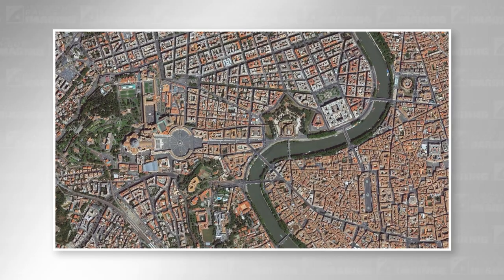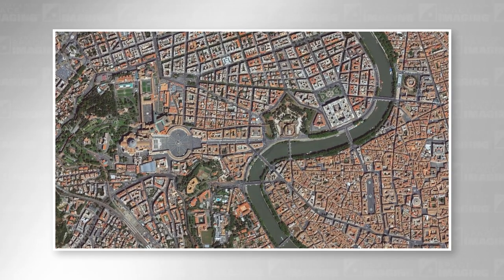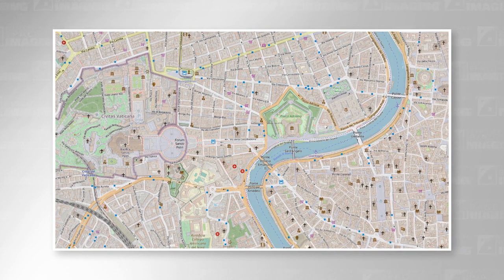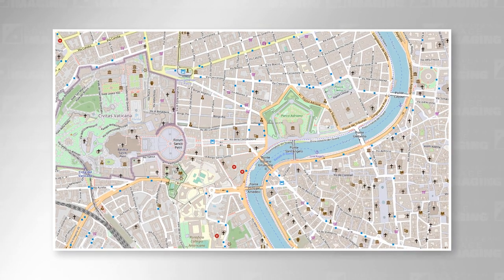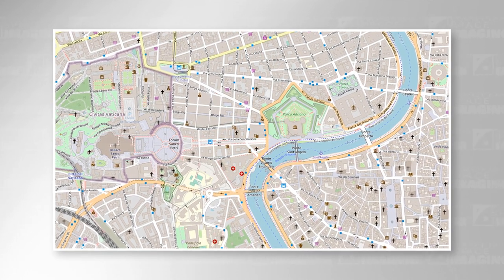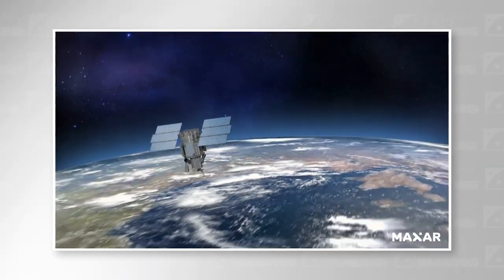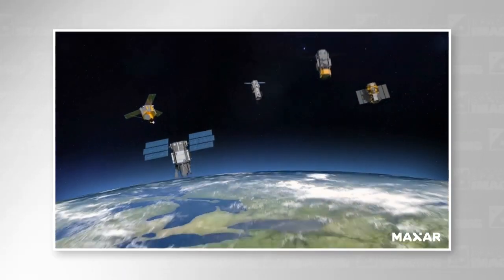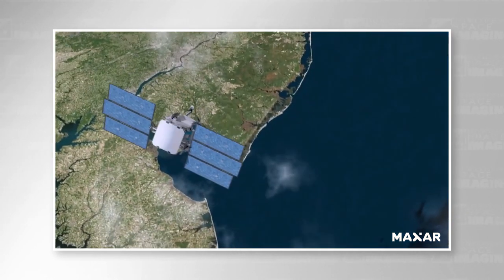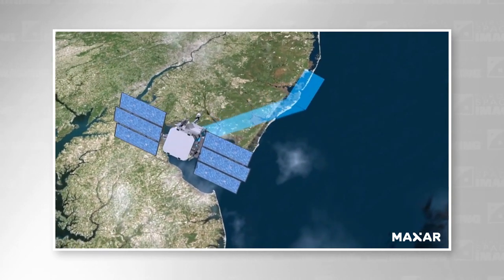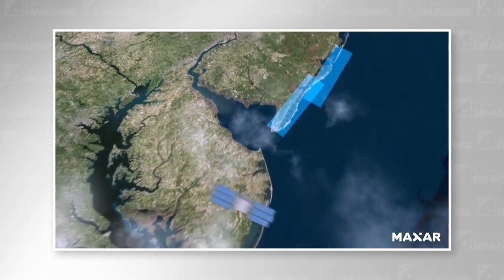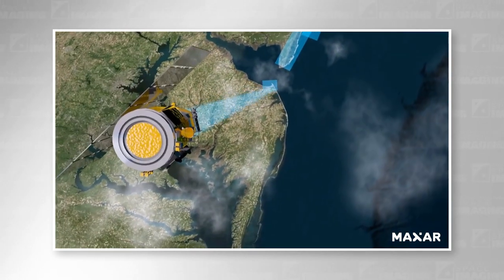Absolute accuracy is how close a pixel in the image is to the actual location on earth. Whilst resolution plays a role, absolute accuracy is more often determined by the positioning device on the satellite. These satellites are 600 kilometers above us and traveling at around 20,000 kilometers an hour, so you can see that they need very sophisticated positioning devices to instantly record the location of an image.